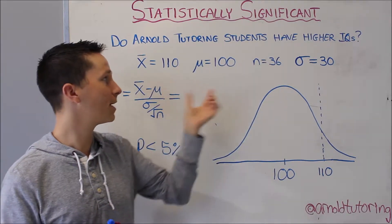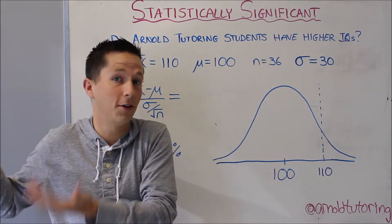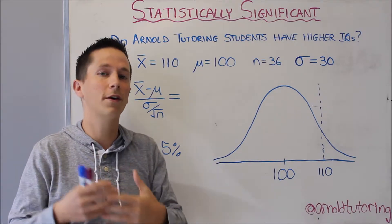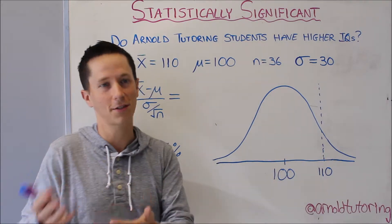So that 110 is clearly different than the 100, but is that just because we happen to ask the 36 smartest kids, or is there actually significance there at the fact that they are Arnold tutoring students? Chance versus the variable.